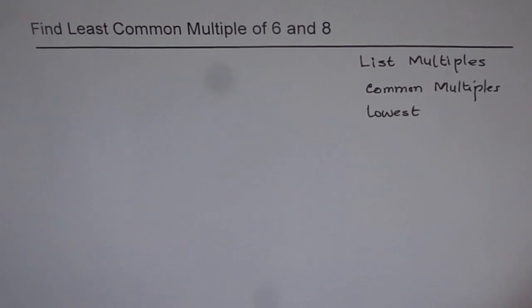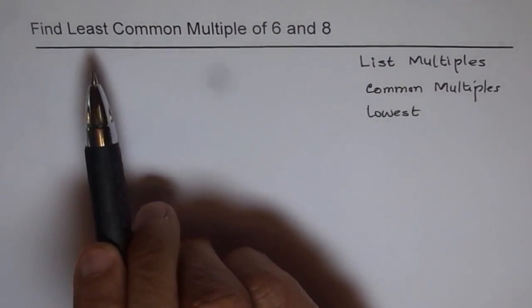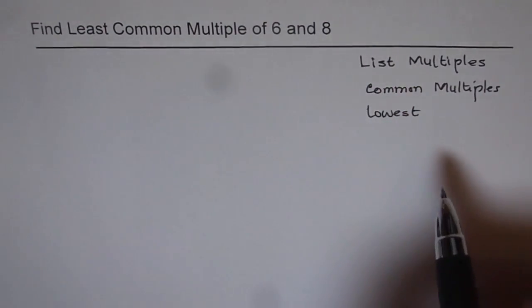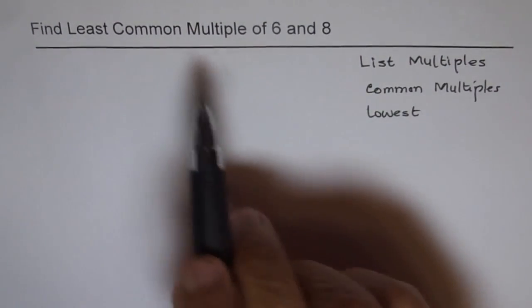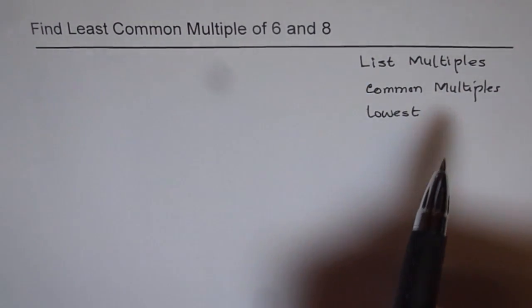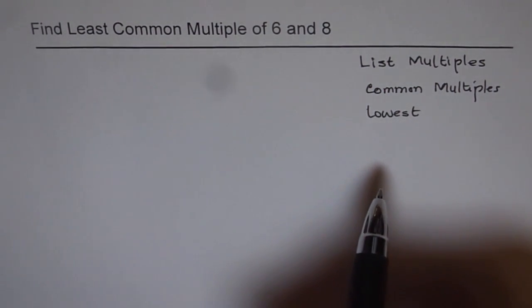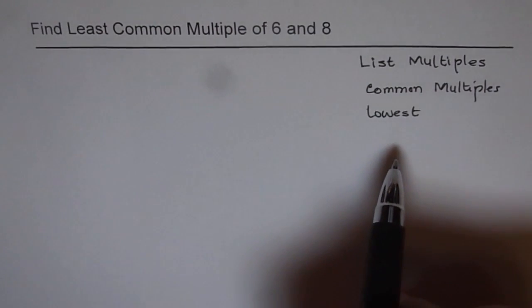And the lowest in that list will give you the least common multiple, right? So as the name suggests, the process is exactly what the name suggests. Least common multiple.